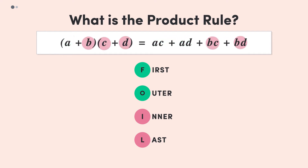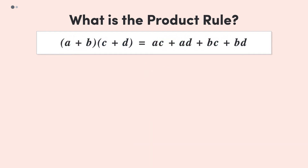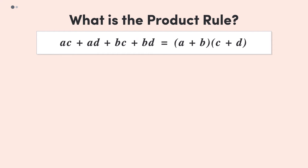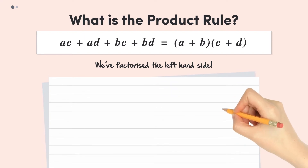Before we move on, there's one more important piece of information that we can get from this rule. If we swap the expressions on either side of the equals sign, we get ac + ad + bc + bd = (a + b)(c + d). In other words, the left-hand side factorises to (a + b)(c + d). This may not be immediately obvious as to why this is, so let's try to factorise the left-hand side ourselves and see if we can end up at the right-hand side.